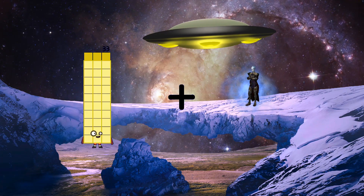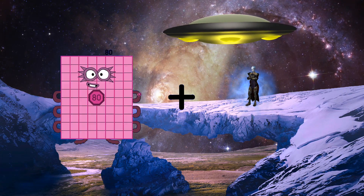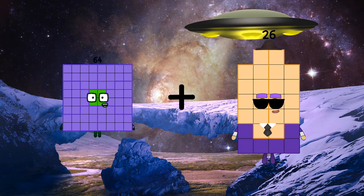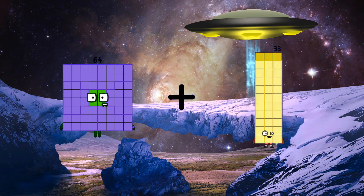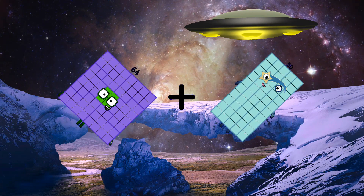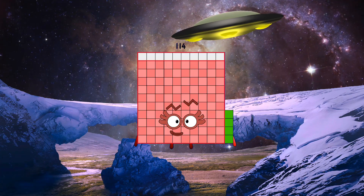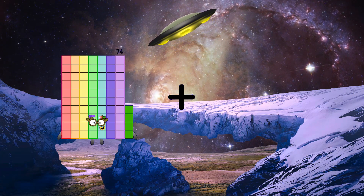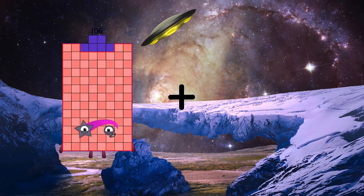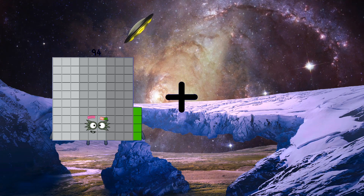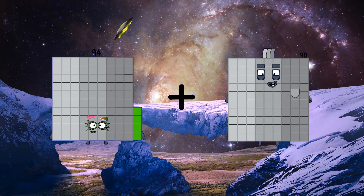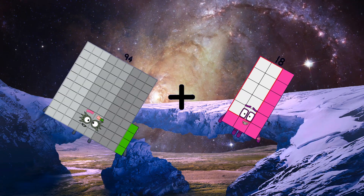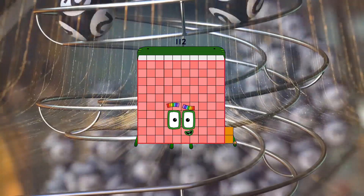64 plus 50 equals 114. 94 plus 18 equals 112.